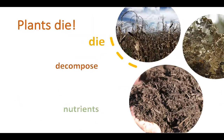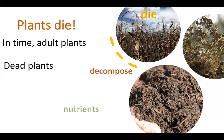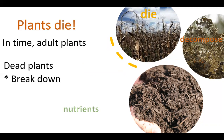After time, the adult plants die. As you see in this picture, these are dead plants, and after time these dead plants will decompose. Decompose means break down. So first the plants die, then the dead plants decompose — it means they break down.